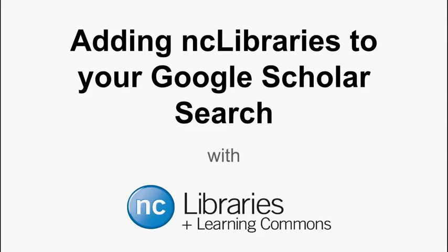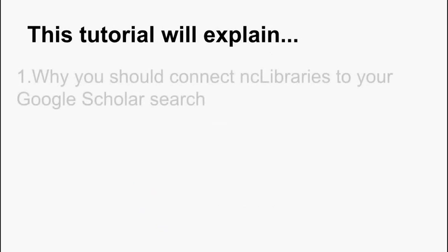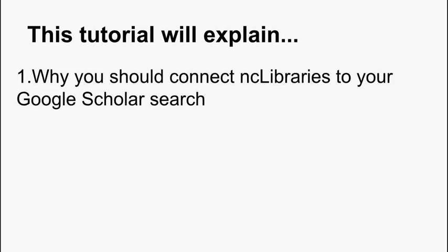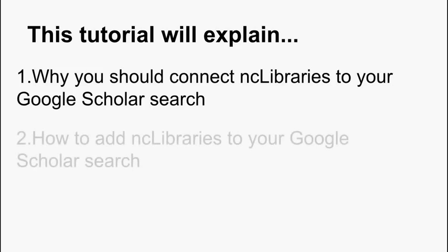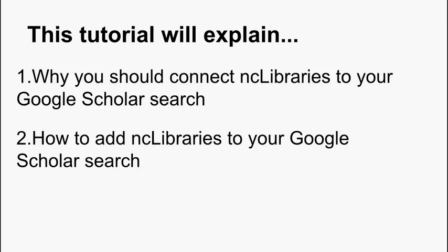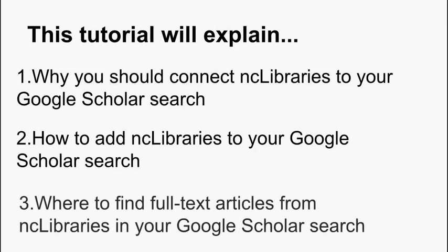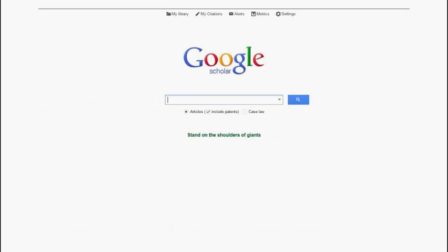This tutorial will show you how to connect your Google Scholar search to full-text resources available through your NC Libraries. This tutorial will explain: one, why you should connect NC Libraries to your Google Scholar search; two, how to add NC Libraries to your Google Scholar search; and three, where to find full-text articles from NC Libraries in your Google Scholar search. Google Scholar is an excellent tool for searching and discovering academic articles from a variety of sources and providing access to those resources that Niagara College Libraries subscribes to.